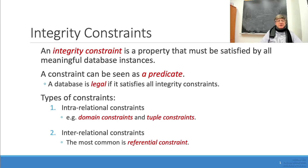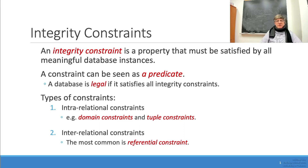Inter-relational constraints, or referential constraints, are conditions that must be satisfied between different tables. For example, in a university database, an inter-relational constraint between a table containing the course list and a table containing student enrollment must satisfy the condition that the course codes where students are enrolled must exist in the table that contains all course codes and descriptions.